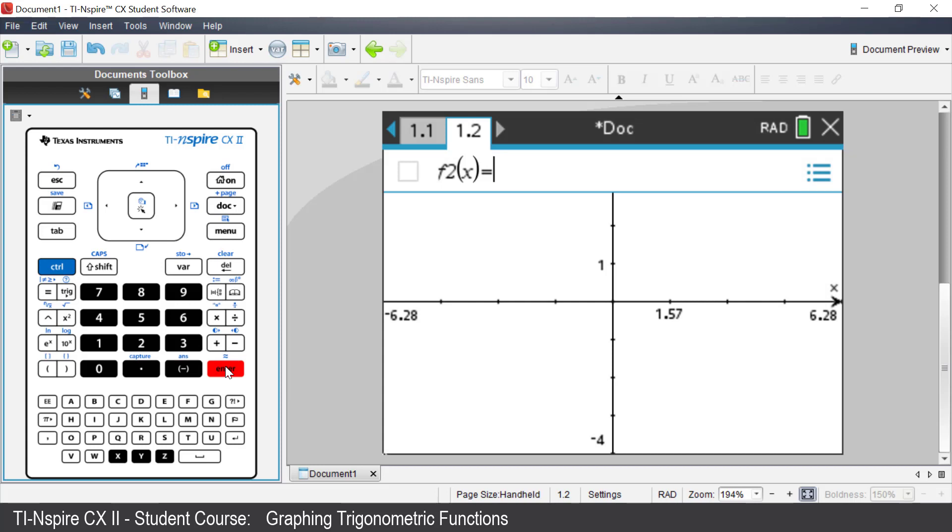We are going to add sliders. In Function 2, enter sine A multiplied by X. Be careful, as if you do not use a multiplication,